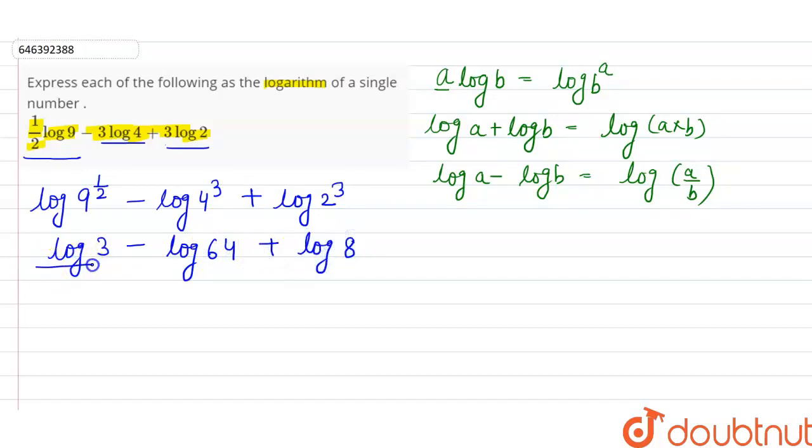Now we use the second formula, log a plus log b. So log a plus log b becomes log 3 into 8. Minus log 64. Now 3 into 8 is 24 minus log 64.